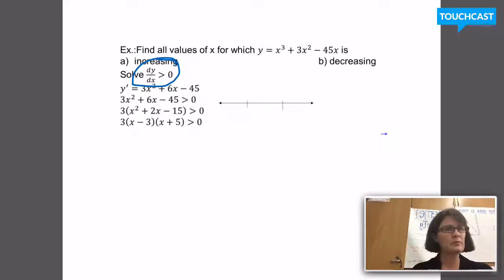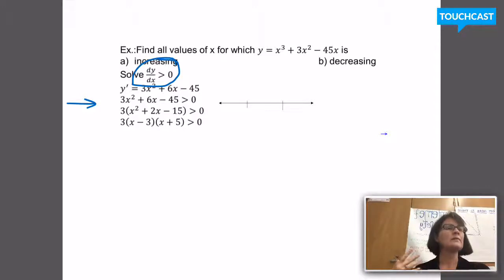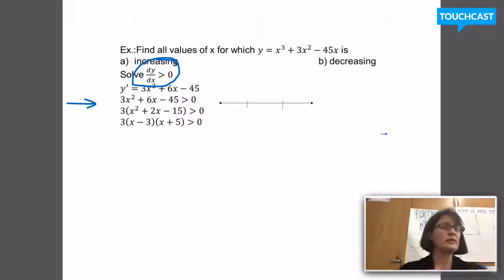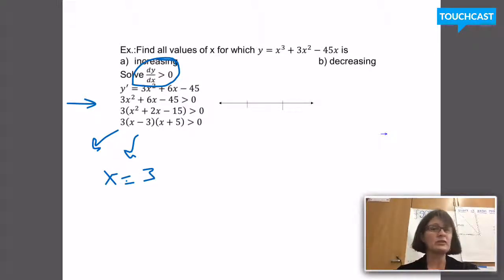Now you can start to see why we spent time practicing solving quadratic inequalities. I want to solve: 3x² + 6x − 45 > 0. Anytime I have a degree greater than 1, I'm going to have to factor. There's a common factor of 3, giving 3(x − 3)(x + 5) > 0. I need to mark the zeros on the number line. x − 3 = 0 when x = 3, and x + 5 = 0 when x = −5. So the two zeros on my number line are −5 and 3.